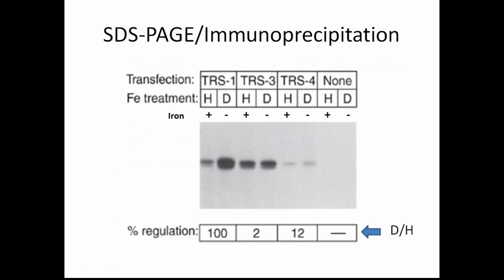The researchers then assayed for TFR synthesis via immunoprecipitation and SDS-PAGE. Immunoprecipitations make use of antibodies that bind to the protein of interest, which in this case is TFR, and SDS-PAGE separates proteins by size. The top row indicates which construct was transfected, the second row indicates whether hemin or desferioxamine was added, and the last row indicates the percent regulation, which is expression with desferioxamine over expression with hemin.